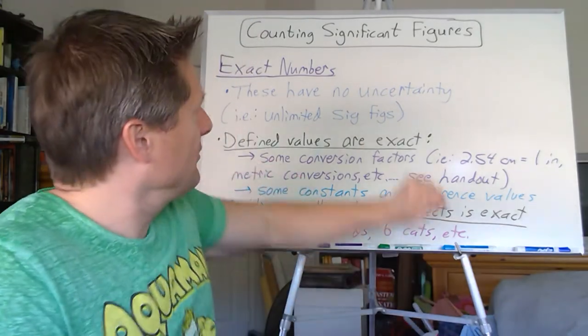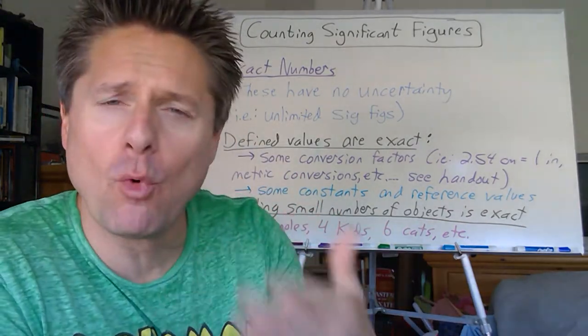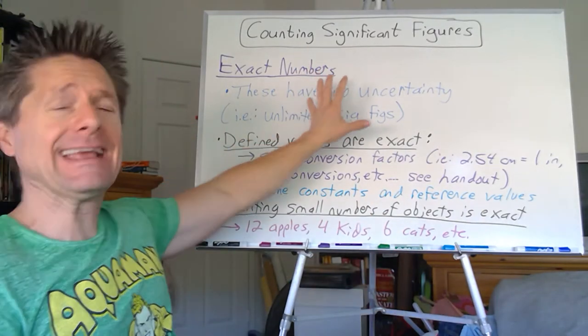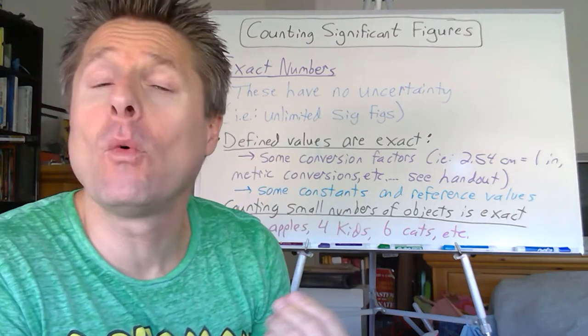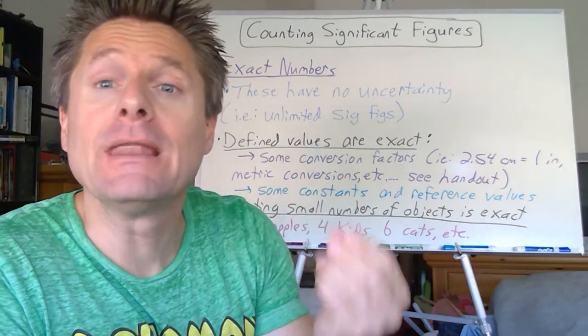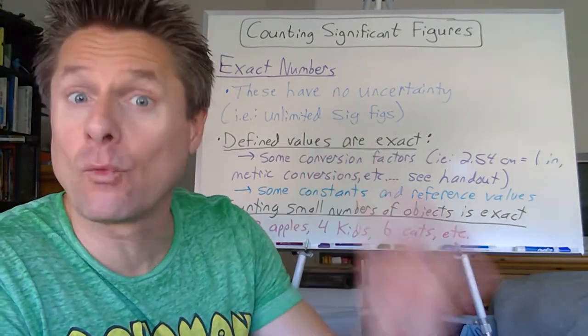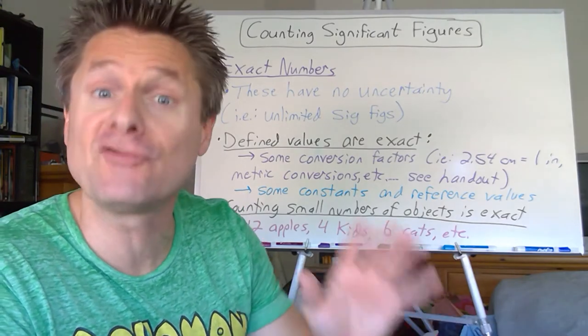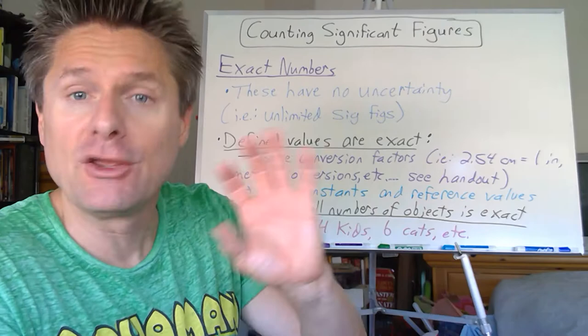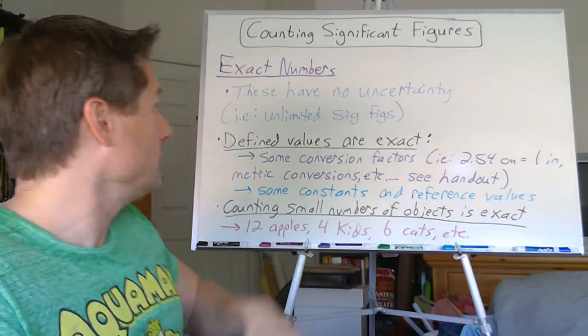First and foremost, let's look at these exact numbers. And as you do this more, you get experience and stuff. You start to recognize things. But exact numbers have no uncertainty. So you can think of them as having unlimited or an infinite number of significant digits. So they're never going to limit any calculations. You don't even worry about them when you're doing a calculation. As far as tracking uncertainty, you just ignore them. Obviously, they're part of the calculation. But you don't even worry about them when you're doing the uncertainty and tracking it through.